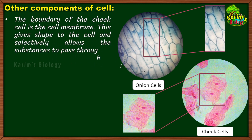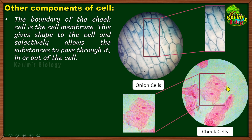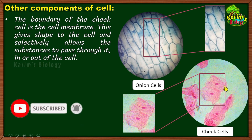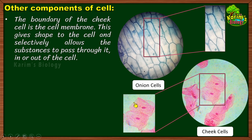The boundary of the cheek cell is the cell membrane. This gives shape to the cell and selectively allows substances to pass through it in or out of the cell. The boundary of the cheek cell — the limiting layer — is called the cell membrane. Around the cheek cell there is a membrane-like structure present which is called the cell membrane. This gives shape to the cell, and the shape of the cell is actually because of this boundary. The cell membrane also separates the contents of the cell from the external environment.